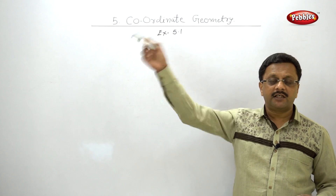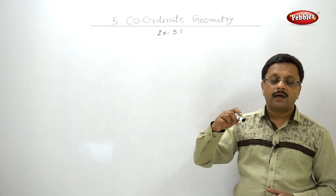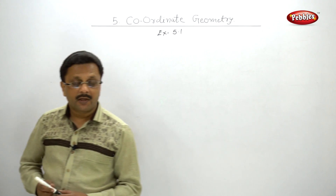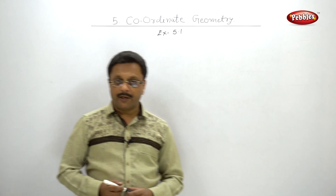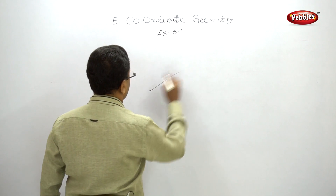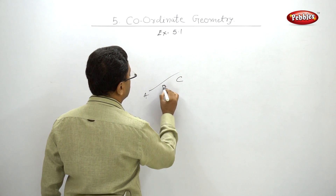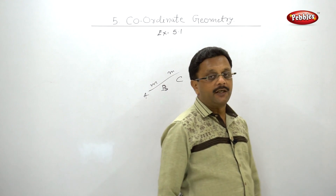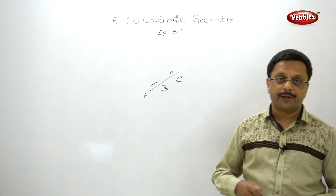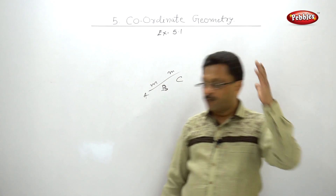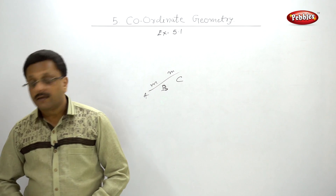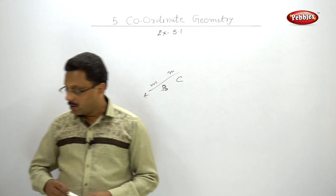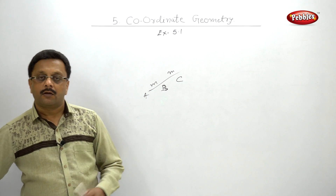If A, B, C are points, find the slope of AB and the slope of BC. If those slopes are the same, and since B is the common point, the points are collinear. Use this same method for all six sub-examples. Please pause your video and solve Exercise 5.1, Question 3.